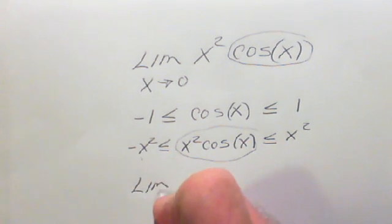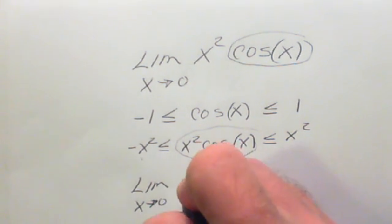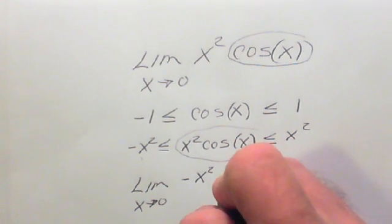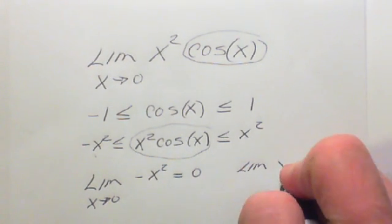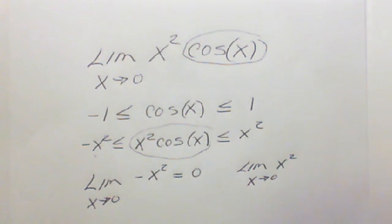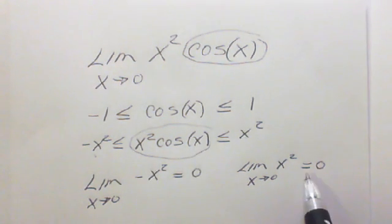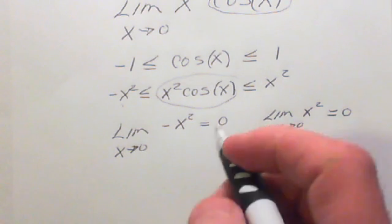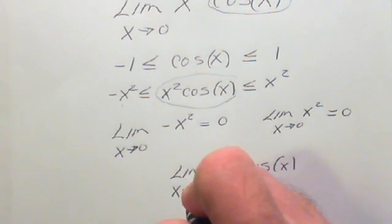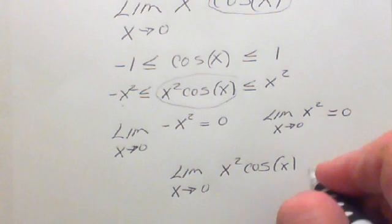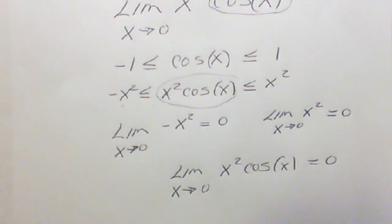So I'm going to take the limit as x approaches zero of negative x squared. As x approaches zero, this function is going to go to zero. We take the limit of x squared as x approaches zero and we also get zero. So we've been able to sandwich this function between the two outer functions. Since both outer limits equal zero, the limit of that middle function also has to go to zero. So the limit of x squared times cosine of x as x approaches zero must also be zero.